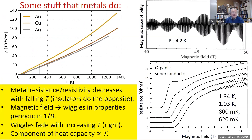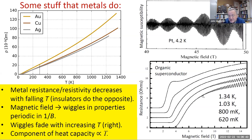Here are some things that metals do. Their resistivity — a normalized resistance — decreases as you lower the temperature. Insulators do the opposite. Since we're a magnetic field laboratory, we put these metals into big magnetic fields, and properties like magnetic susceptibility and resistance show wiggles. These wiggles get further apart as you go to higher magnetic fields — they're periodic in one over the magnetic field. You can see in the lower right figure that data at different temperatures show wiggles fading away with increasing temperature. There's also a component of a metal's heat capacity at low temperatures that's proportional to temperature T, which we'll use later.